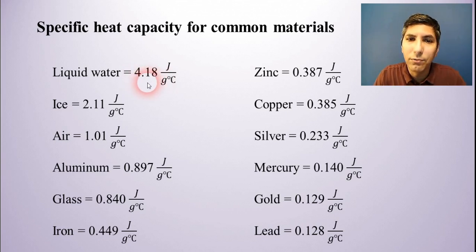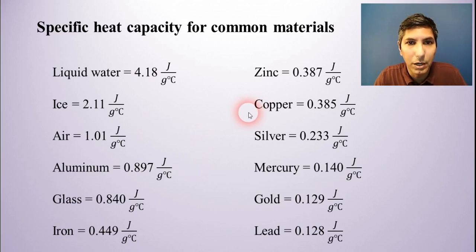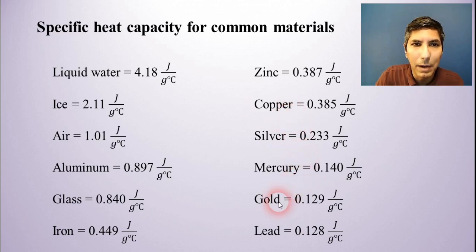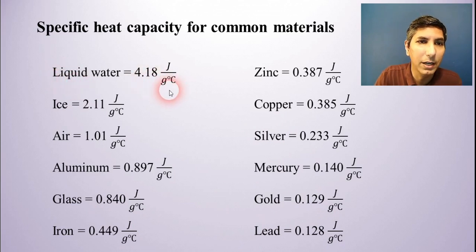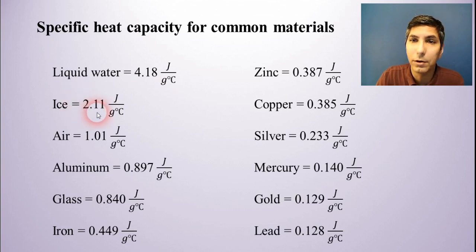On the other hand, take a look at materials like aluminum, iron, or copper. These are materials found in cookware because they heat up very quickly and cool down very quickly as well. Generally speaking, the materials at the bottom of this list — things like lead and gold — are considered good conductors of heat. Whereas materials with higher specific heat are going to be considered insulators. Water is actually a very good heat insulator, and ice is actually a very good insulator as well. Perhaps you've heard of igloos — that's one of the reasons why they would build an igloo out of ice.